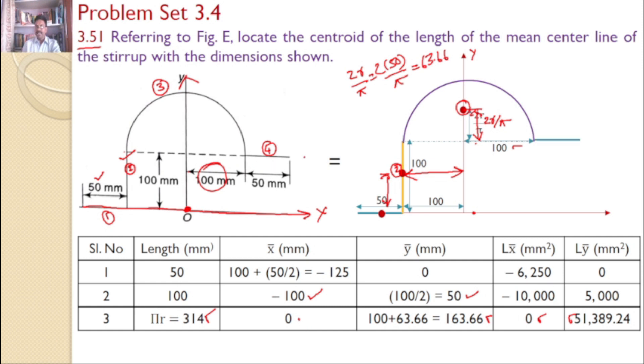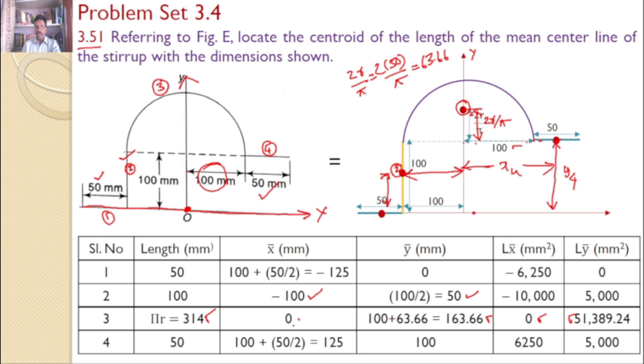Now consider the last line, line 4. The length of line 4 is 50 mm, at a distance of 100 mm from the y-axis and at a height of 100 mm from the x-axis. The centroid for line 4 is here. Clearly, y4 equals 100 and x4 equals 100 plus 50 by 2, which is 125. So the x-coordinate is 125 and the y-coordinate is 100.